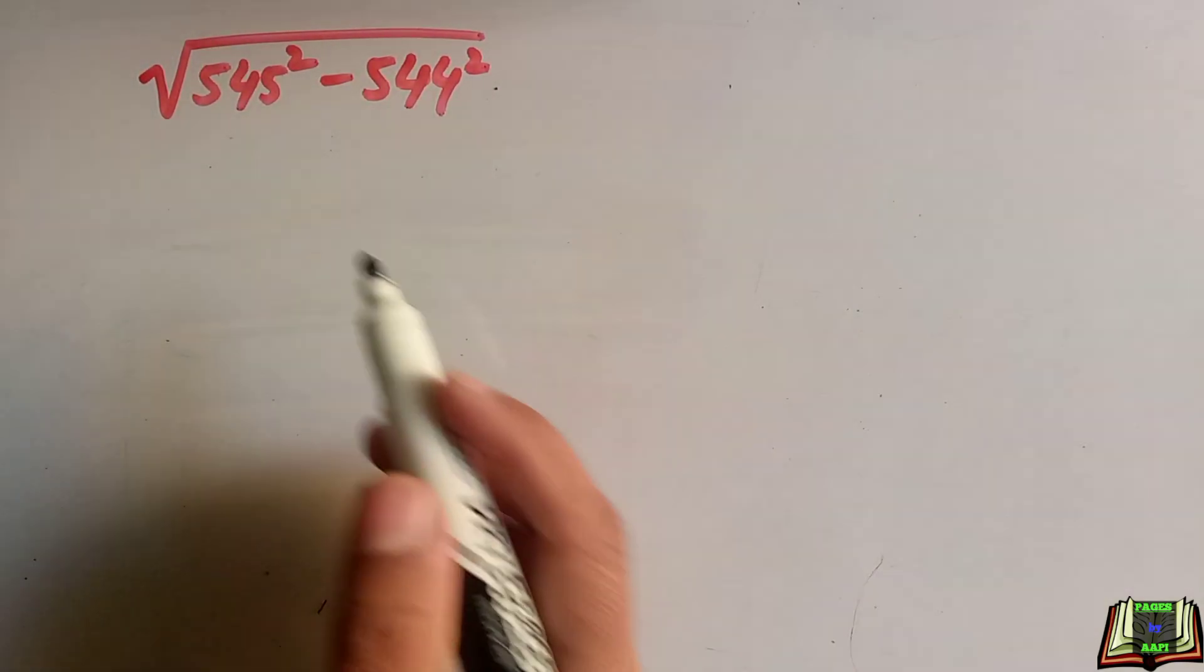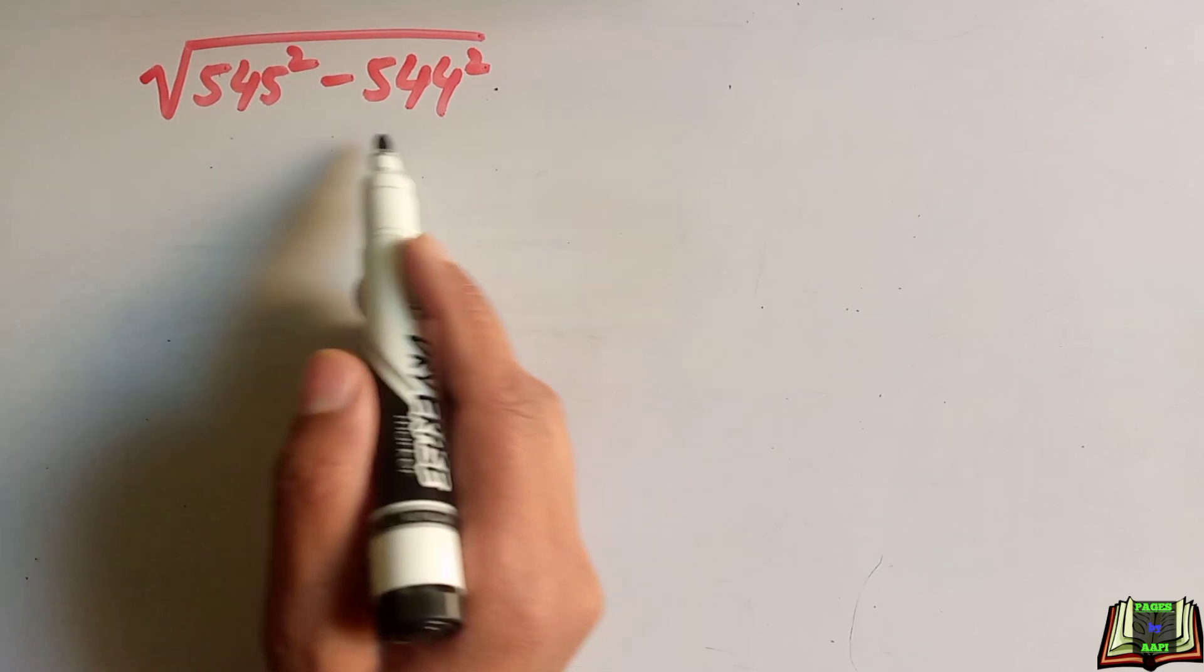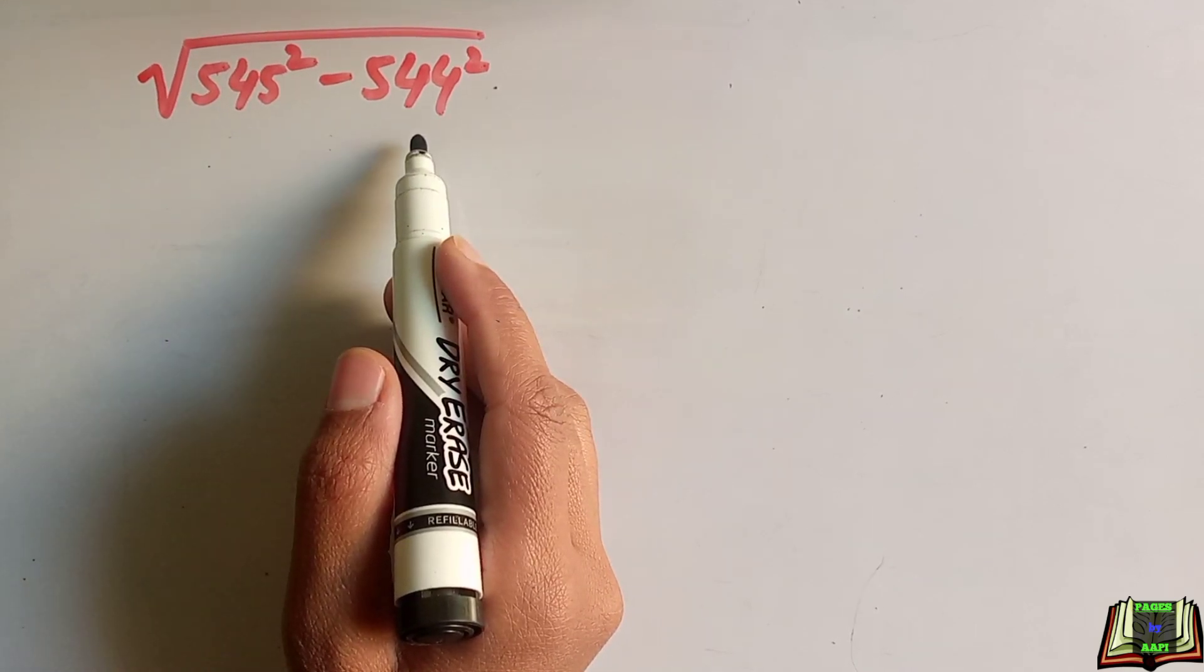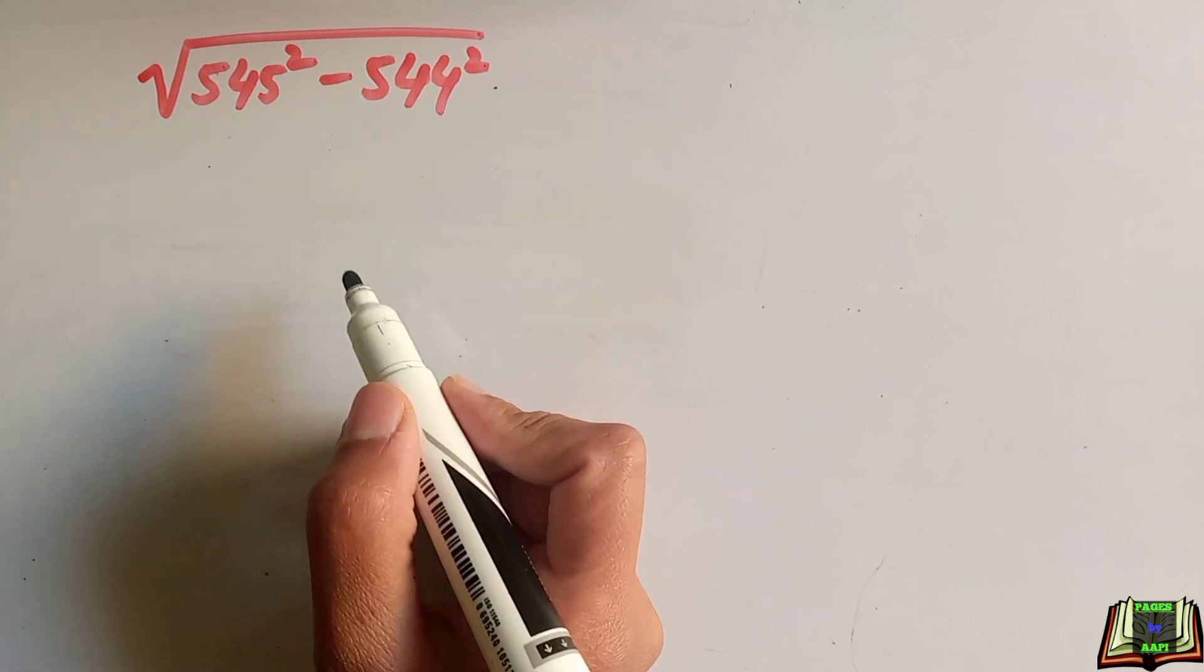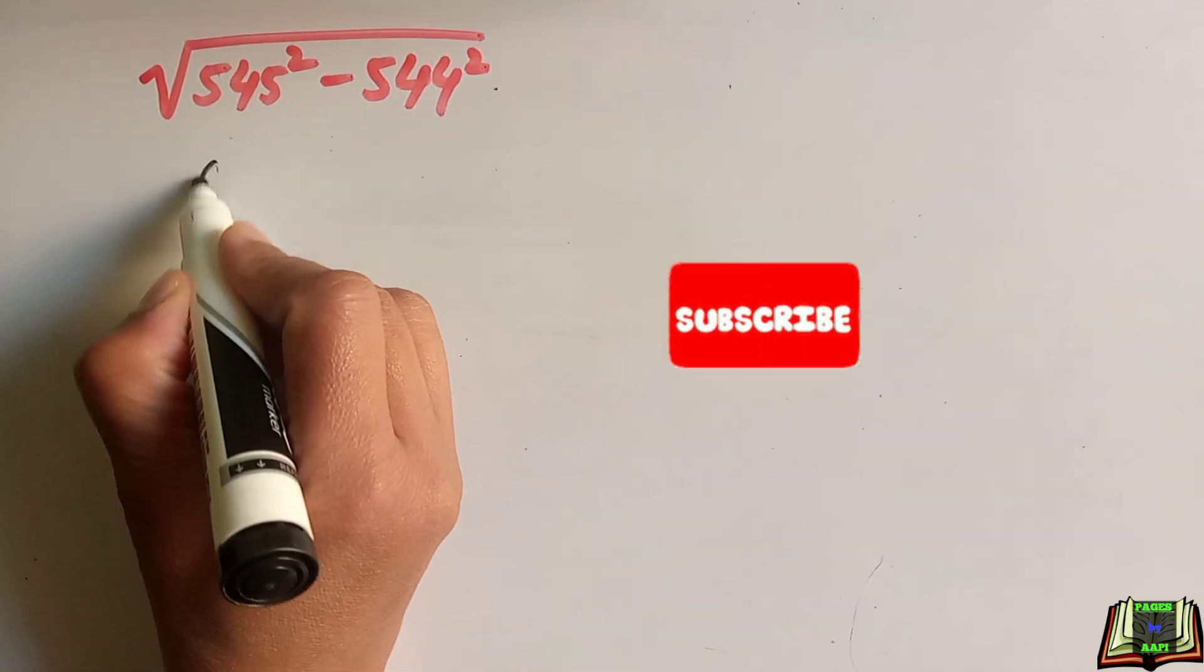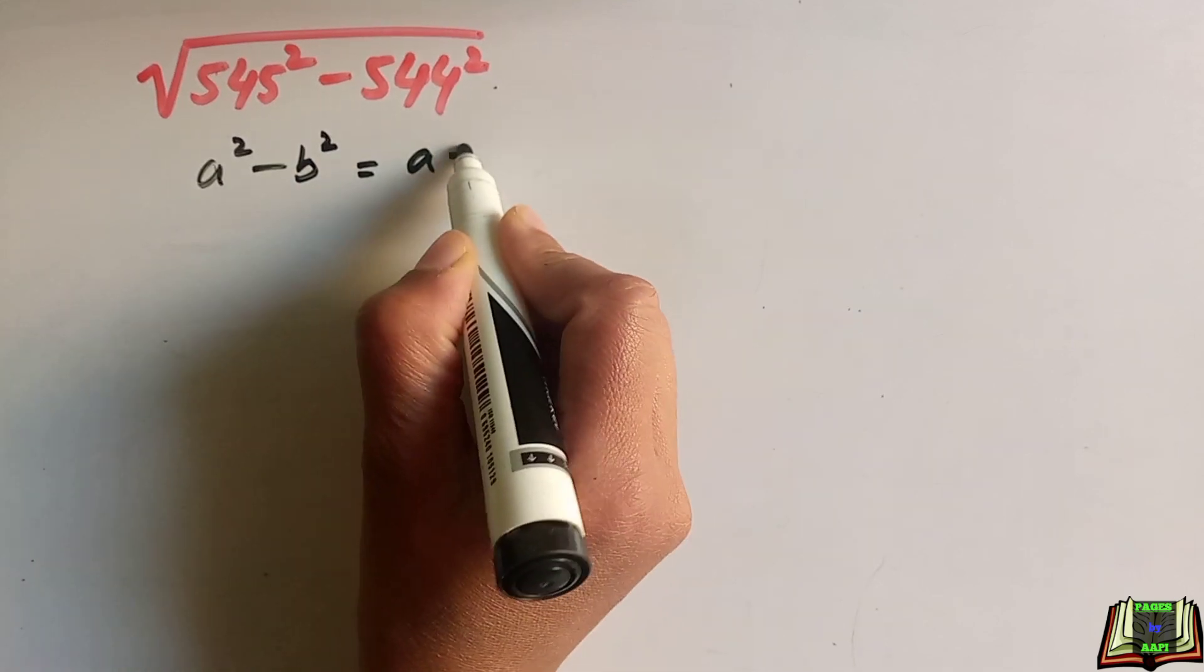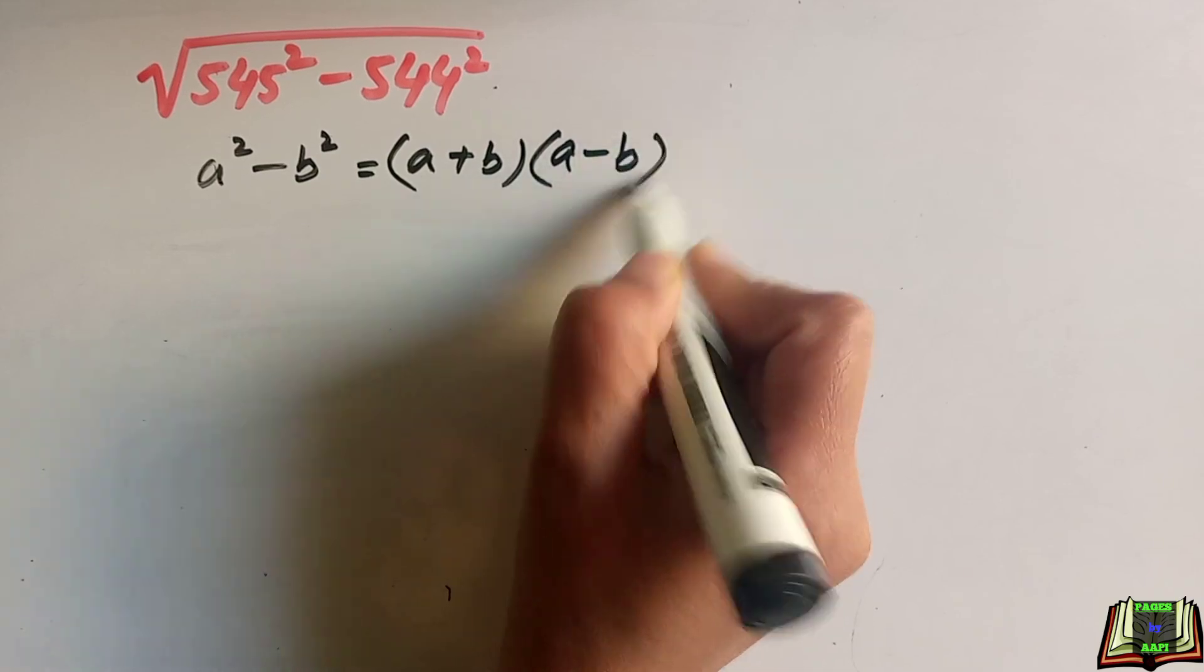Welcome back. Keep your calculator aside and let's solve 545 square minus 544 square within a minute. So let's get started and see how we can solve it. We can see that 545 square minus 544 square is in the form of a square minus b square, and this identity is equal to a plus b times a minus b.